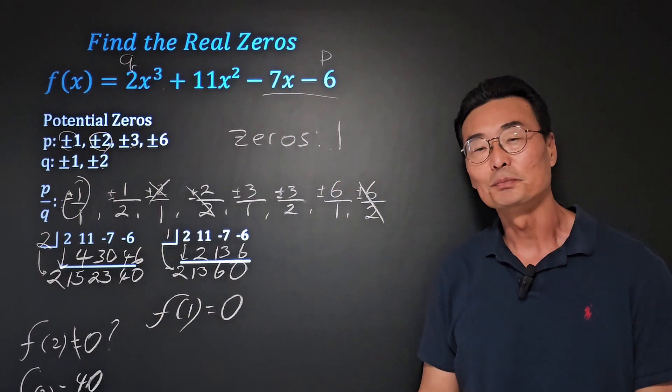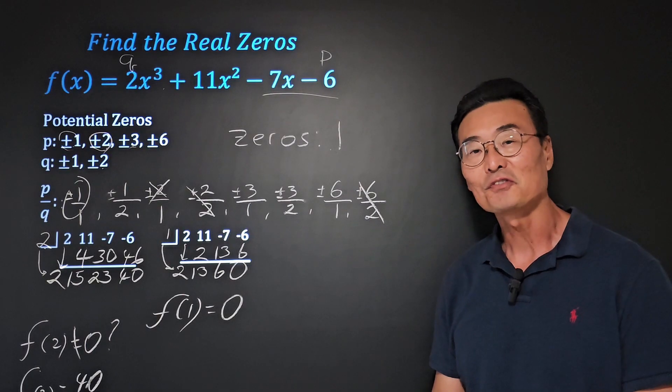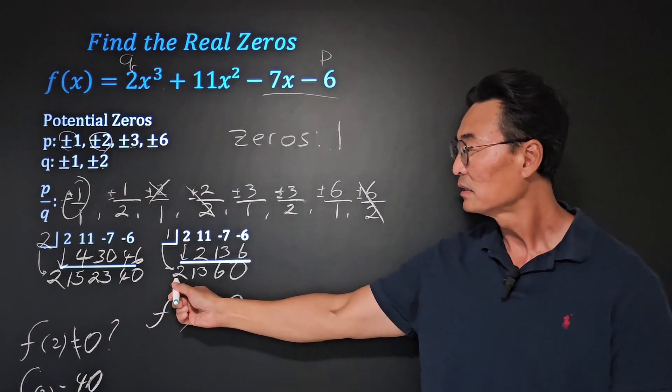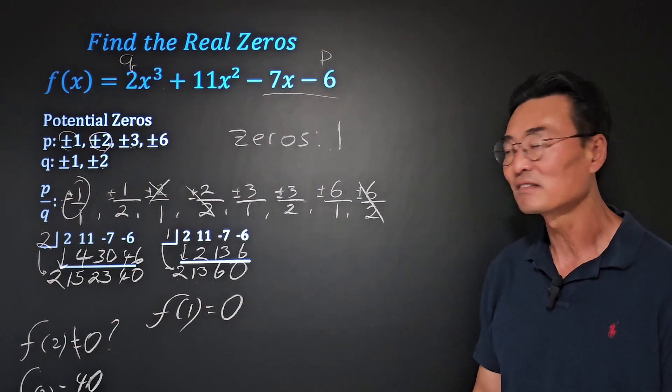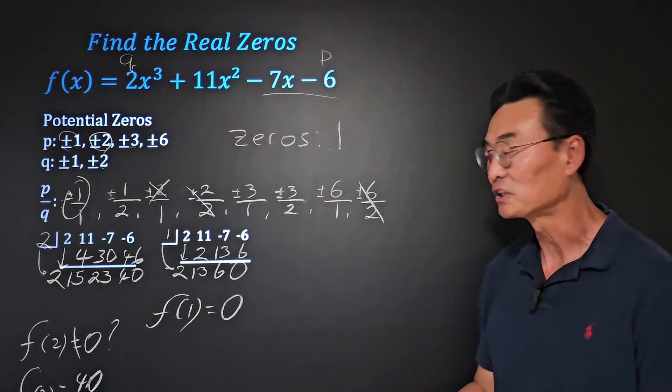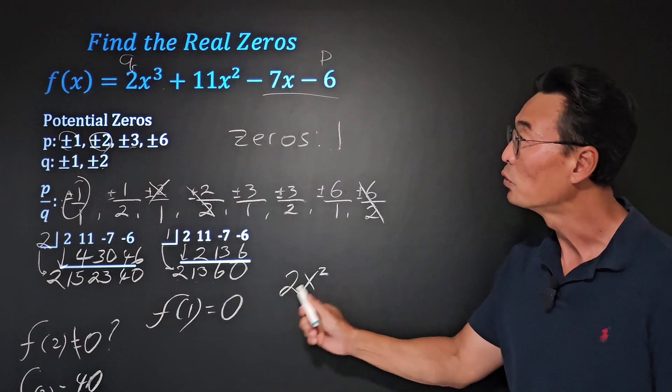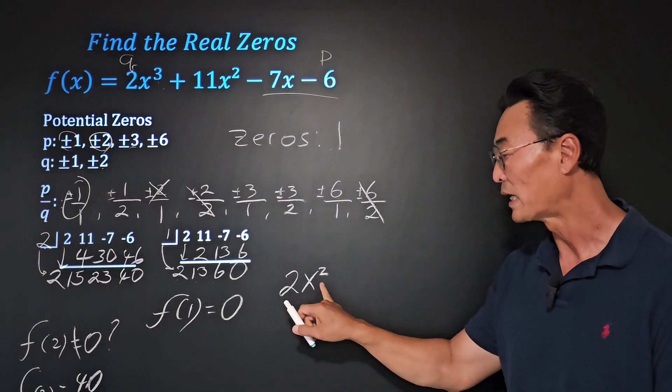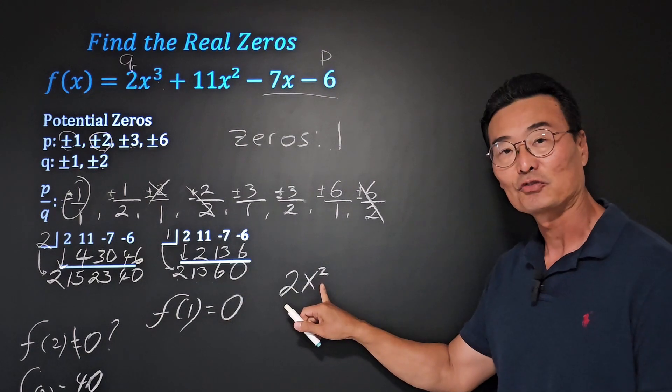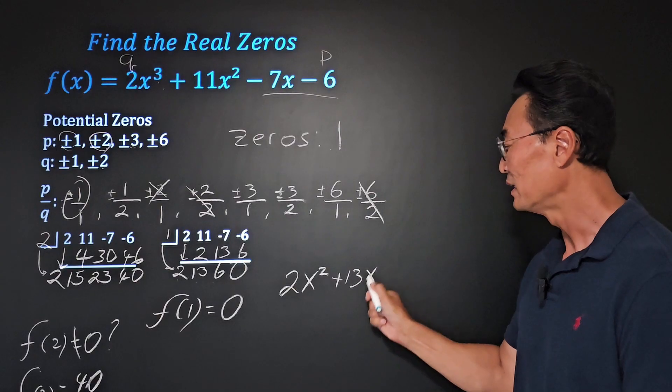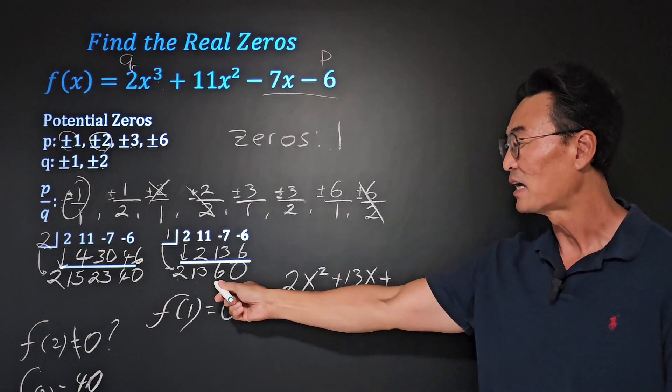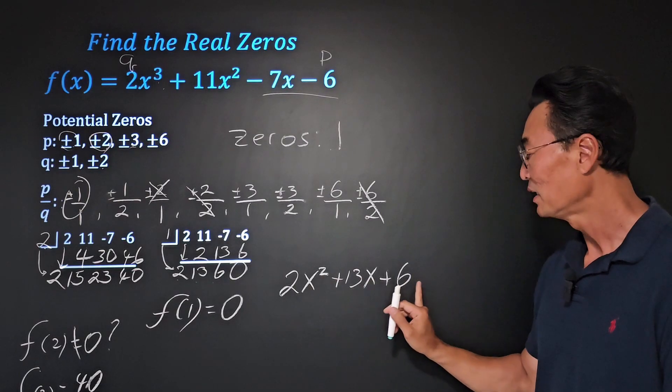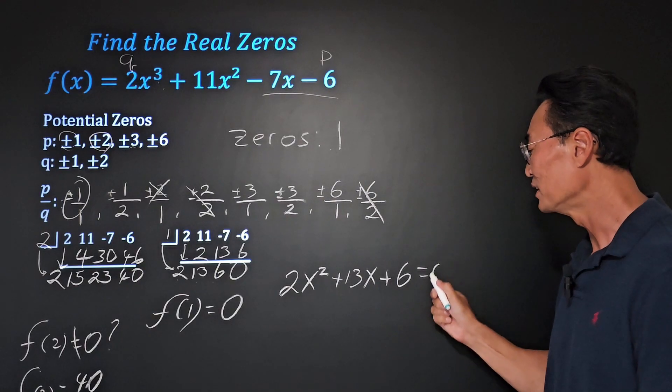Then to find the rest, what we want to do is take these numbers, so 2, 13, and 6, and write it as a function. So we have 2x squared. Notice we started with a degree of 3. Once you do the synthetic division, you go down by 1, so that's why it's going to be an x squared plus 13x plus the last one will be 6. Notice we start with x squared, x, and no x. And then we'll set this equal to zero.